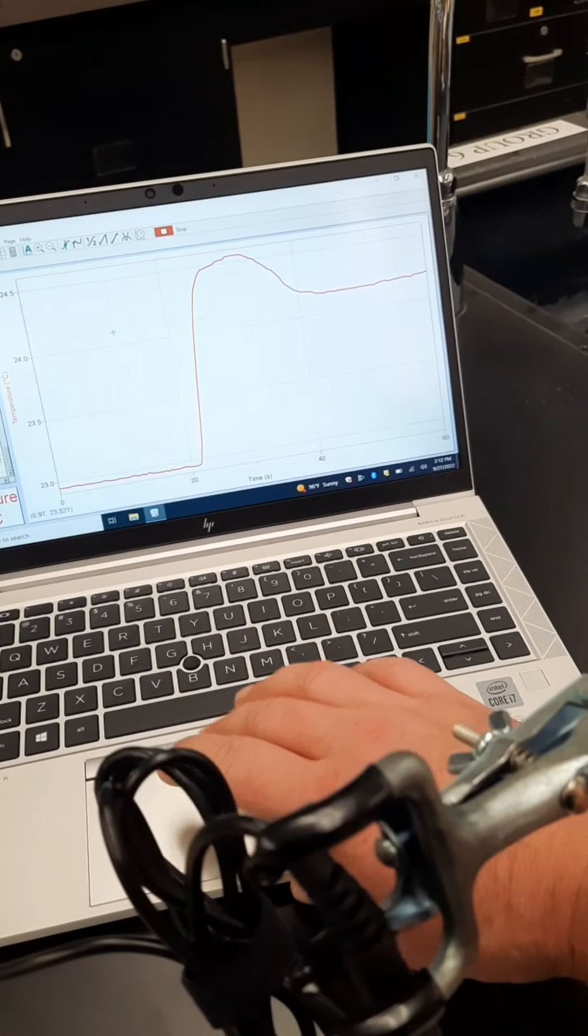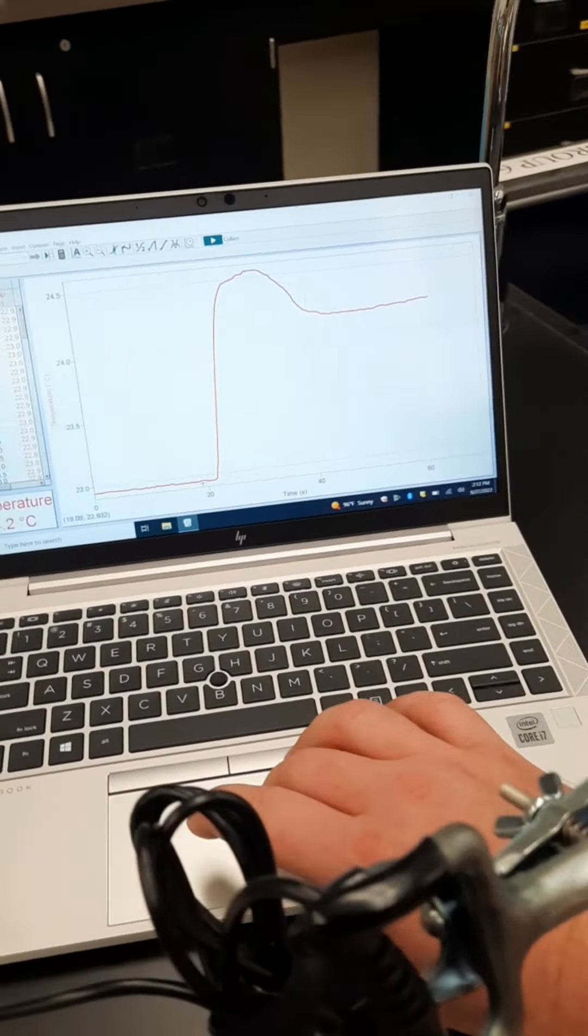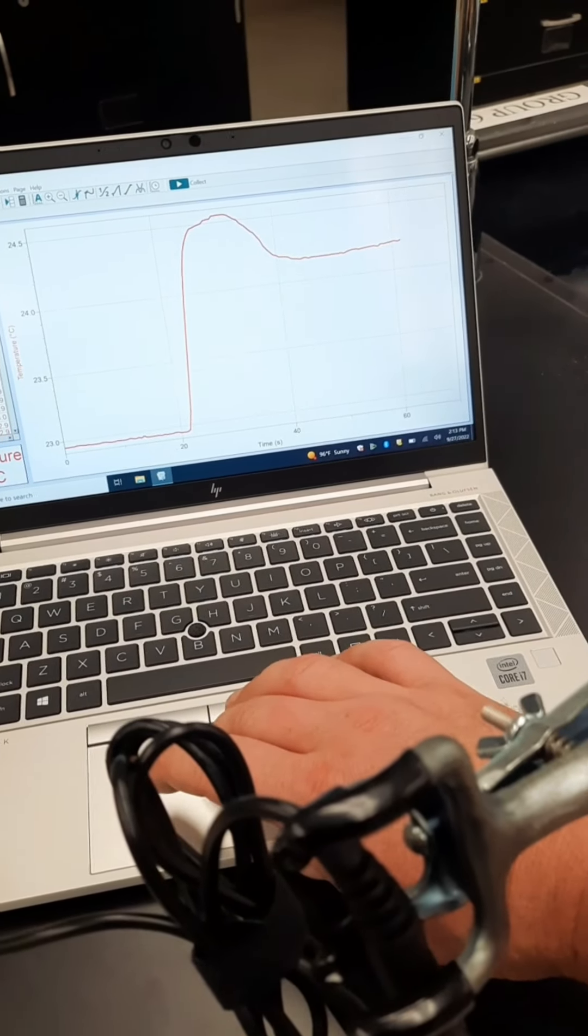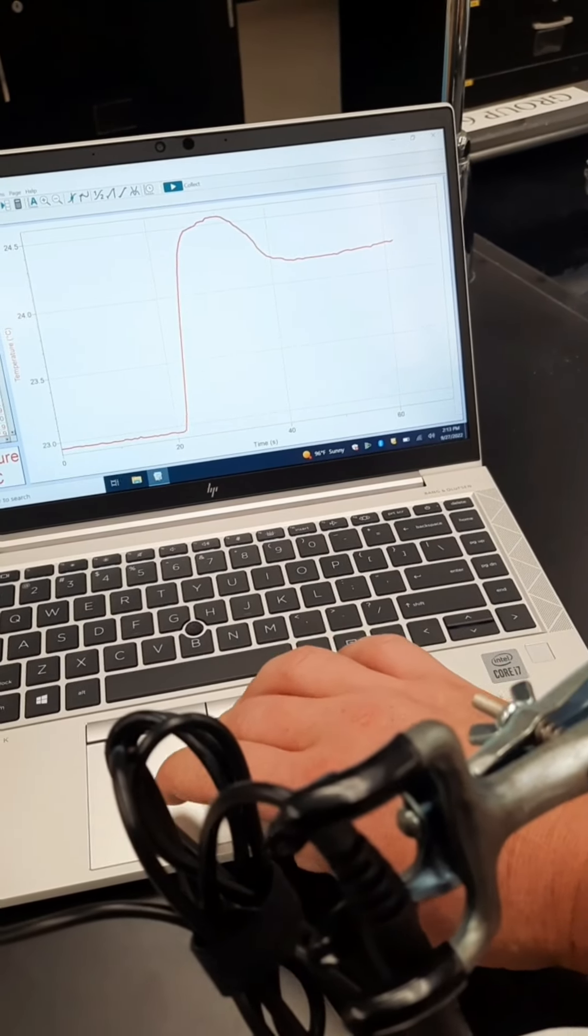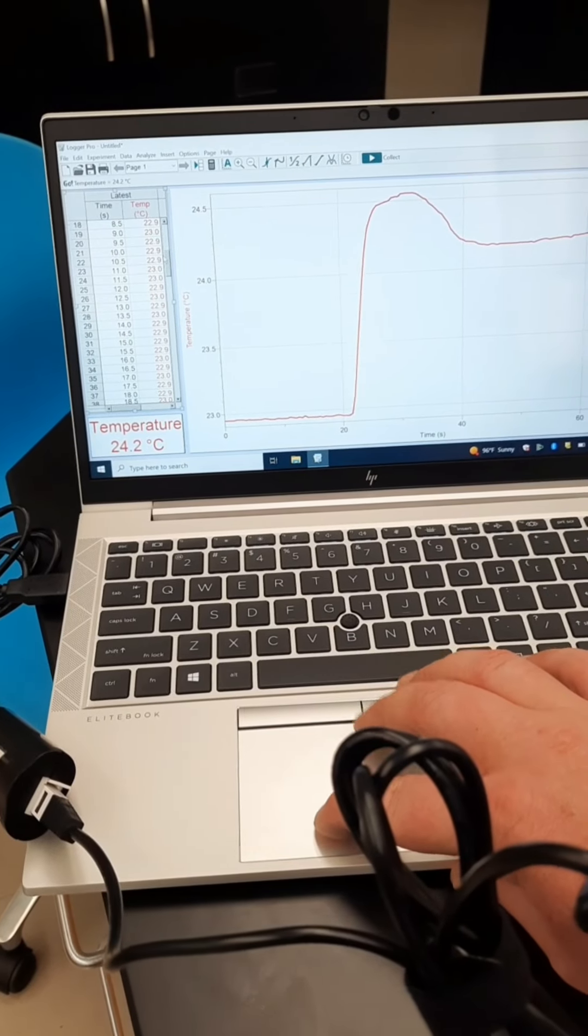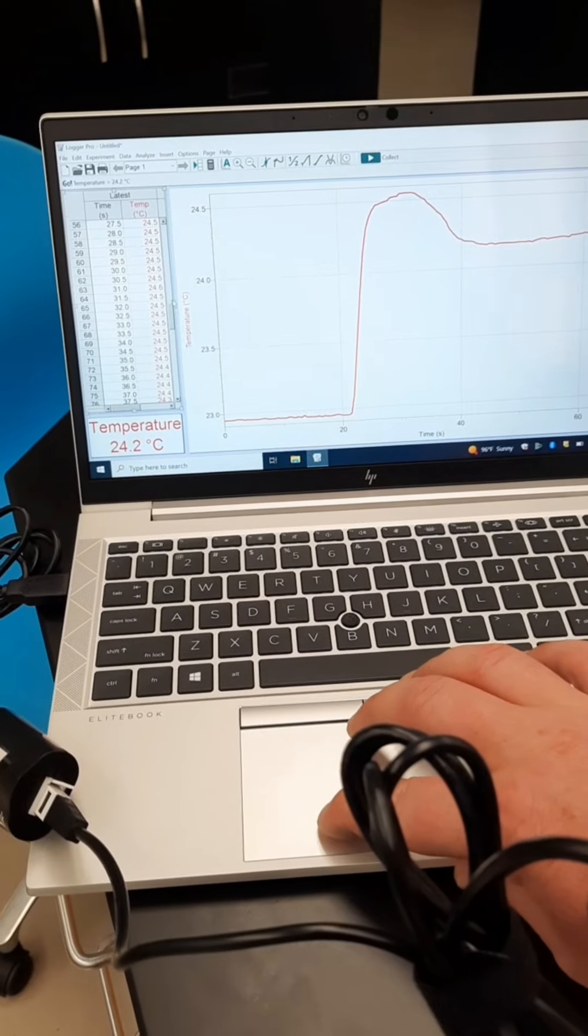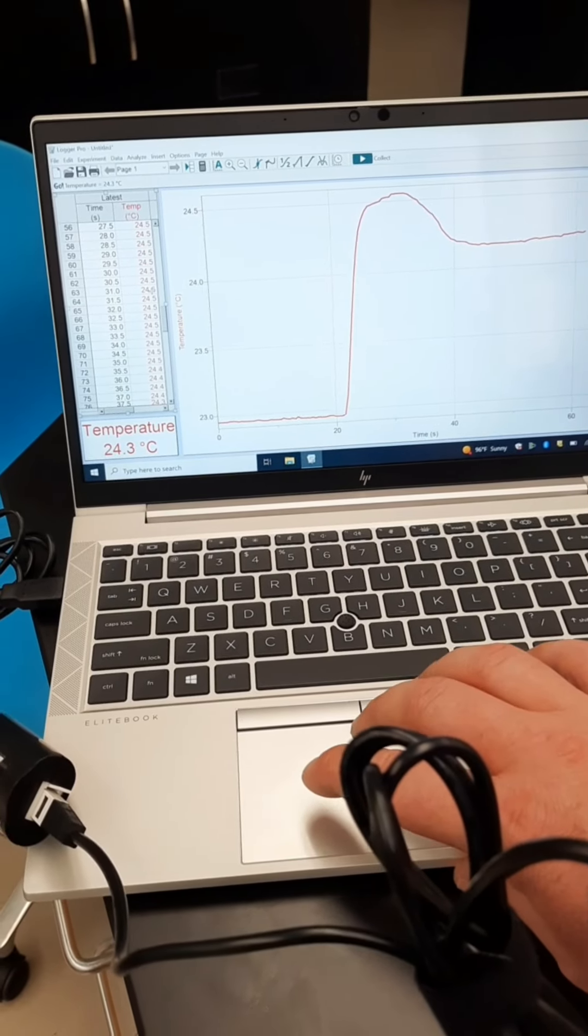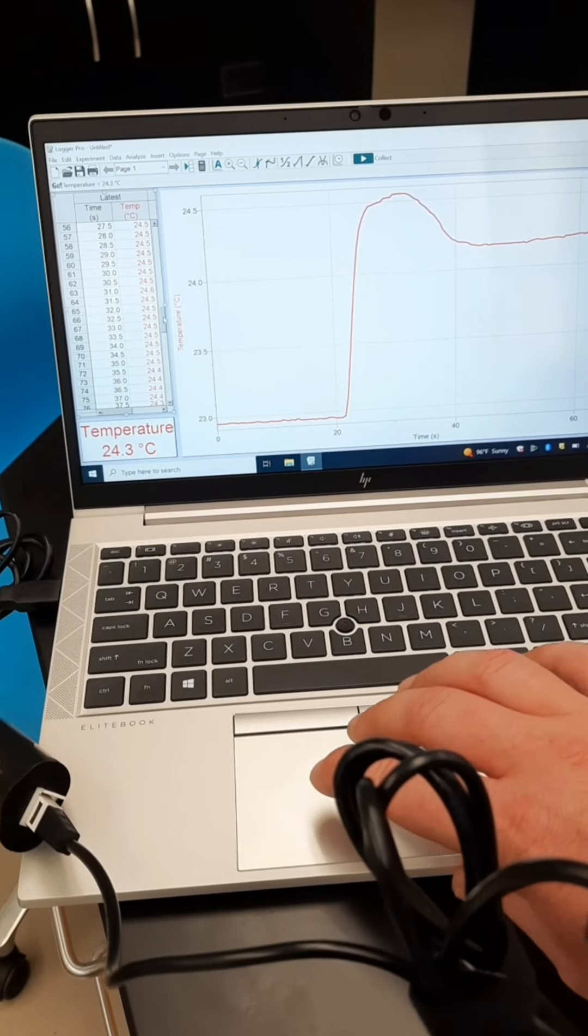We can hit the stop here. So the temperatures we want are the initial temperature, the lowest we observed and that was 22.9, and the highest up here, we can scroll down through this and see that it was about 24.6. So from there we can see our total change in temperature.